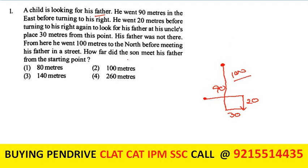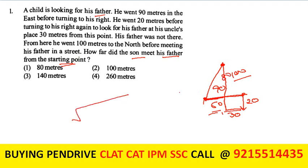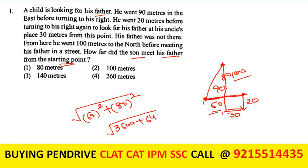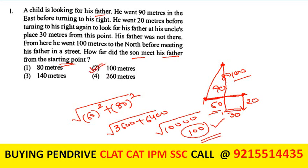Now the question is: how far did the son meet his father from the starting point? We apply the Pythagoras theorem. The horizontal distance is 90 minus 30 = 60, and the vertical distance is 100 minus 20 = 80. So 60² + 80² = 3600 + 6400 = 10,000. The square root gives 100 meters. Hence, the second option is my answer: the distance is 100 meters.